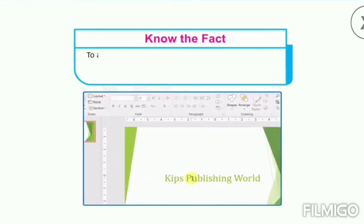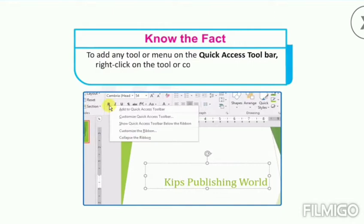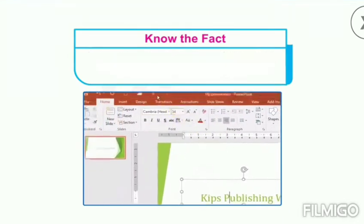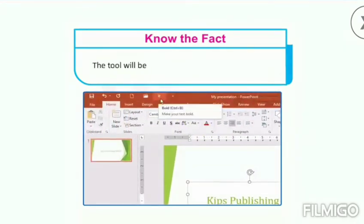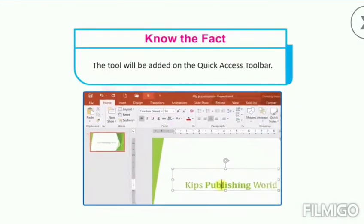Another fact to note is that to add any tool or menu on the Quick Access Toolbar, right click on the tool or command and select the Add to Quick Access Toolbar option. The tool will be added on the Quick Access Toolbar.